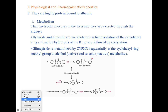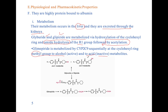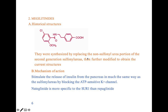Sulfonylureas are highly protein-bound to albumin and metabolism occurs in the liver, excreted through the kidneys. Glyburide and glipizide are metabolized via hydroxylation of the cyclohexyl ring followed by amide hydrolysis of the R1 group, then acetylation. Glimepiride is metabolized by CYP2C9 sequentially; the methyl group is metabolized to an active alcohol and then to an inactive acid. On the exam I do not focus heavily on the metabolism of glyburide, but it is good to have that information available.